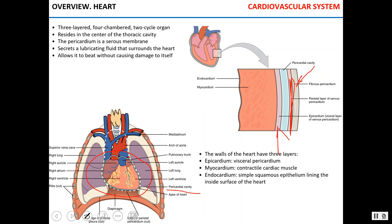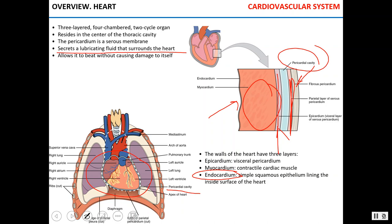Looking at the layers that comprise the heart wall itself, the visceral pericardium, or epicardium, is the outermost layer. Myocardium, a layer of contractile cardiac muscle, is in the middle. A thin layer of simple squamous epithelium lining the inside surface of the heart is called the endocardium. Between the visceral and parietal pericardium there is a cavity called the pericardial cavity.